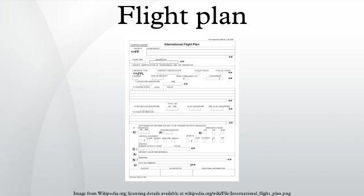The domestic flight plan form 7233-1 includes several blocks. Type refers to the type of flight plan — flights may be VFR, IFR, DVFR, or a combination of types termed composite. Aircraft identification is the registration of the aircraft, usually the flight or tail number. Aircraft type and special equipment describes the type of aircraft and how it's equipped. For example, a Mitsubishi MU-2 equipped with an altitude reporting transponder and GPS would use MU2/G.